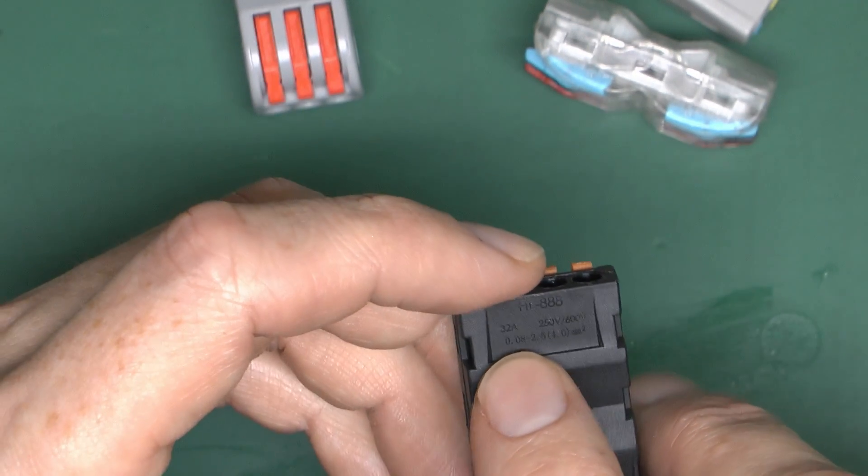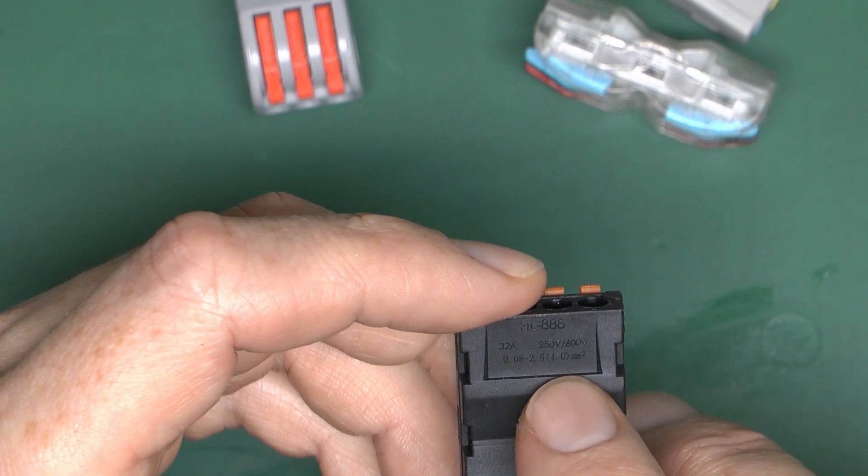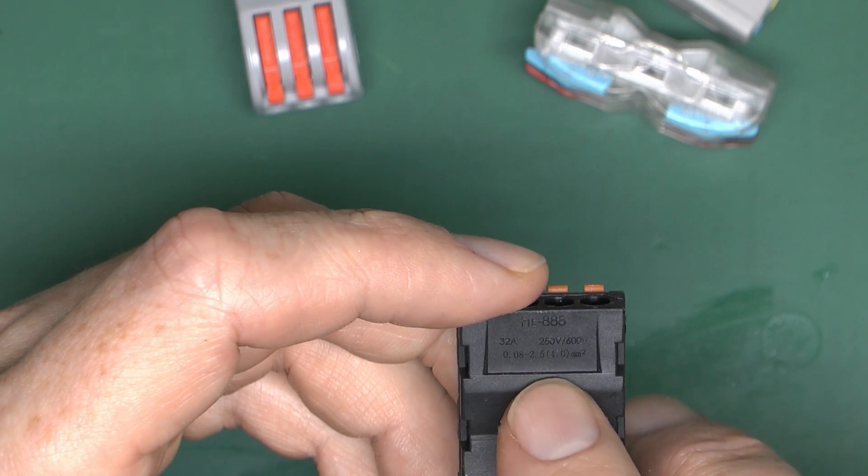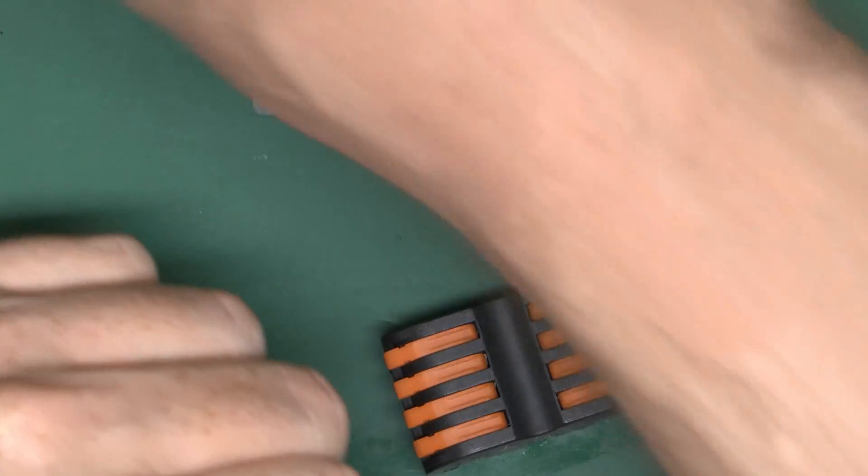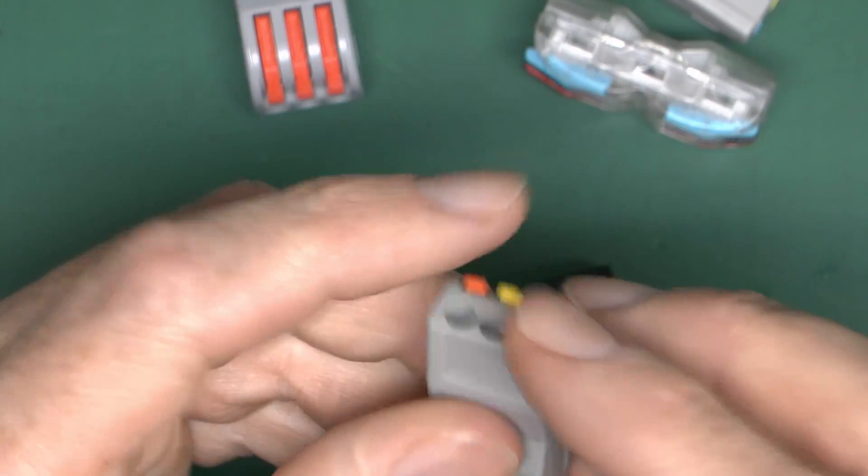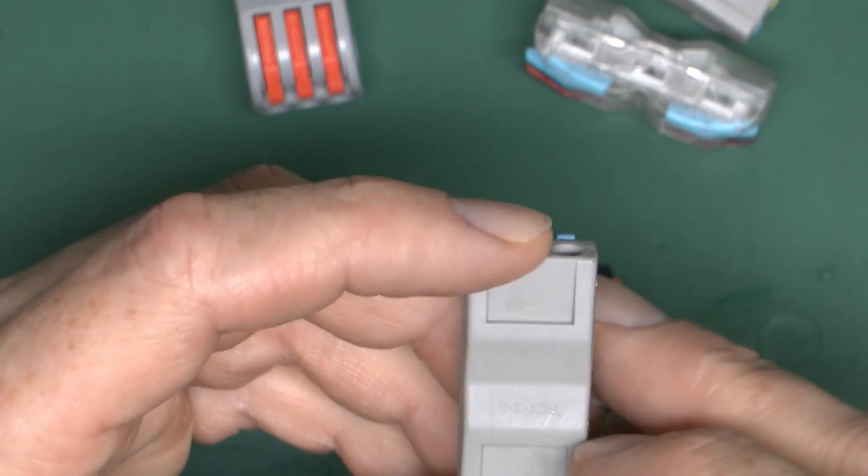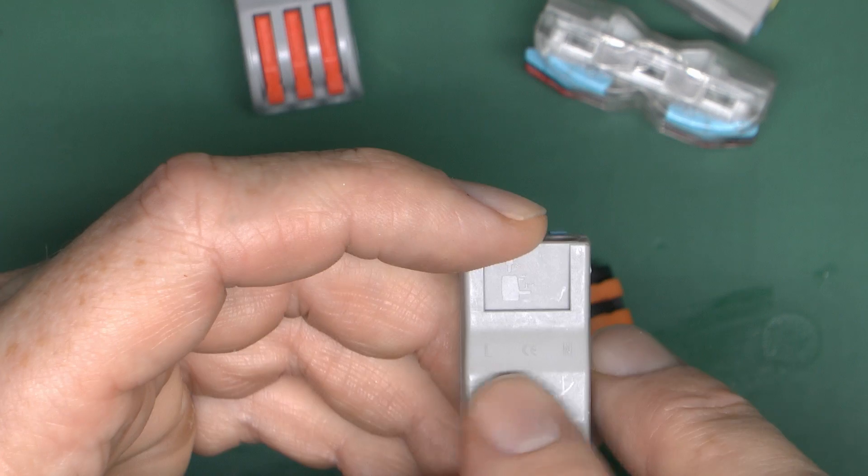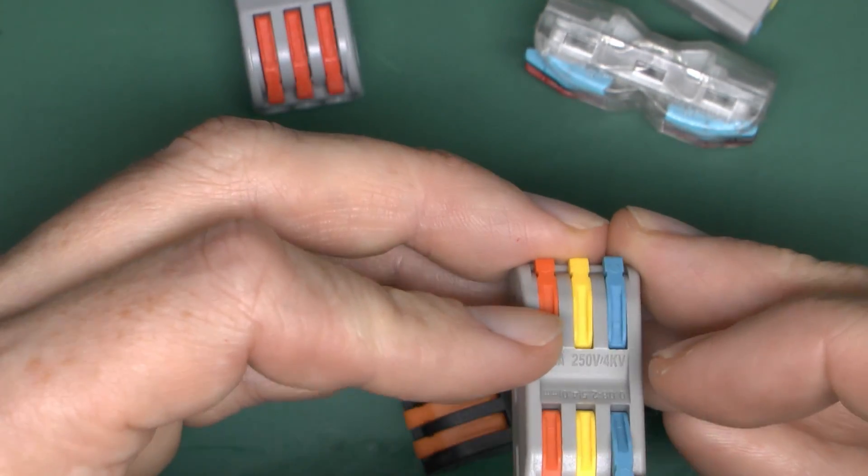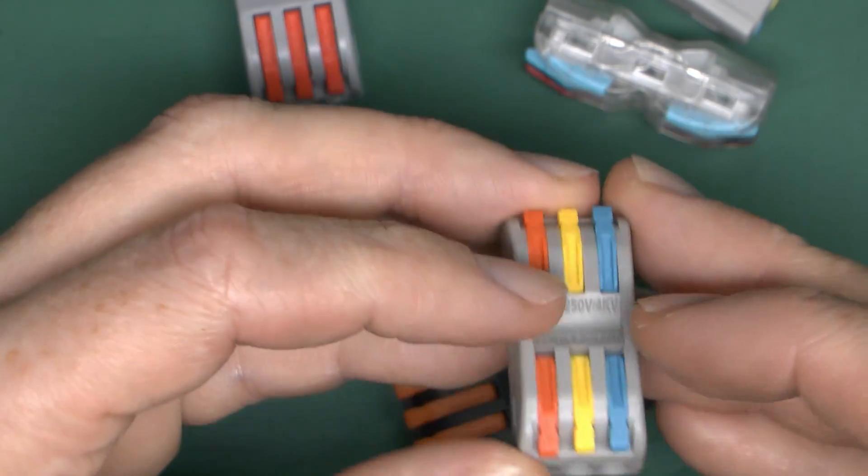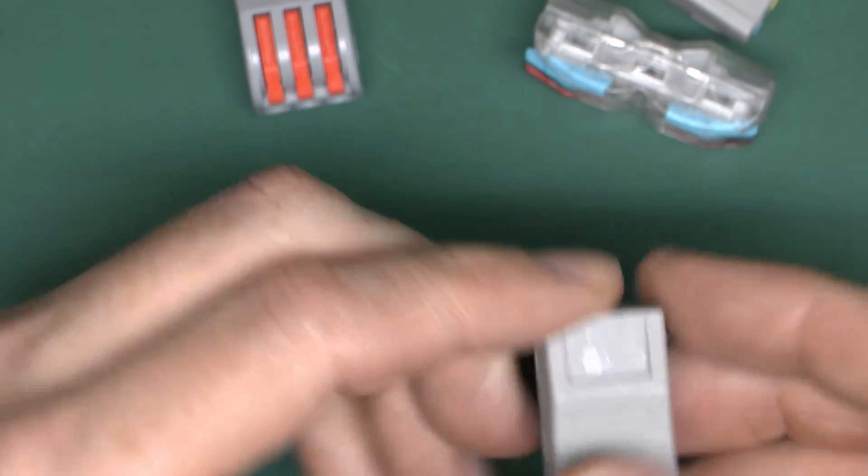This one does tell us the ratings. Apparently 32 amps, 250 volts or 600, and the size of wirepoint 0.8 to 4 millimetres squared. So there you go. And this one, again, it's got various markings on there, and it does have L and N printed. In this particular case, L is orange, and N is blue. And then the yellow one is for whatever else you wish to use.